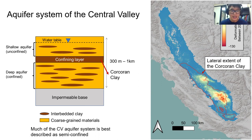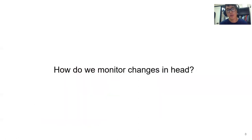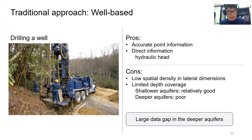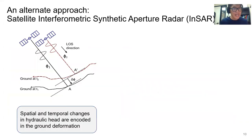Much of the Central Valley system is best described as semi-confined due to numerous interbedded clays, which can act as small confining layers. The traditional approach to monitoring is well-based, which provides accurate point information and direct information about hydraulic head changes. However, spatial density of well data is generally low, and depth coverage is limited due to increasing drilling costs. The shallow aquifer has relatively good coverage while the deep aquifer has very poor coverage, creating a large data gap that we aim to fill using InSAR.